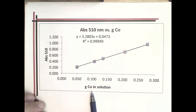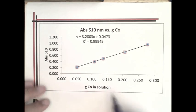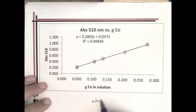If this were molarity, you'd have to divide this number. Molarity would be grams of cobalt in solution